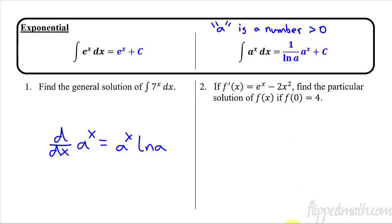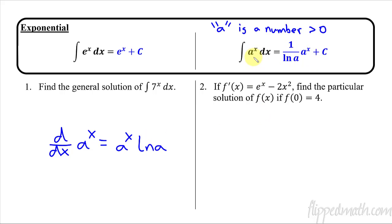The answer is 1 over the natural log of a, times a to the x, and then plus c for your general solution. If you look at that part and take its derivative, the 1 over natural log of a acts like a coefficient, and the natural log of a's cancel, which gets you back to the original.